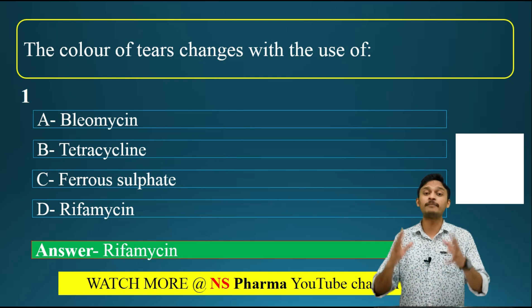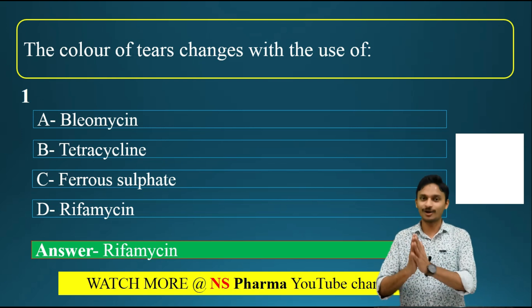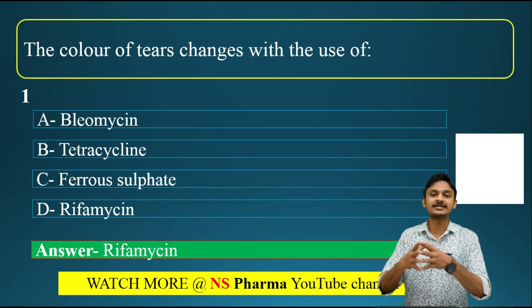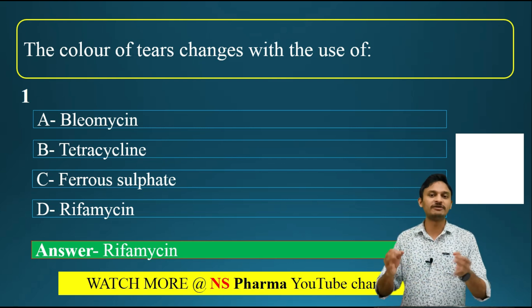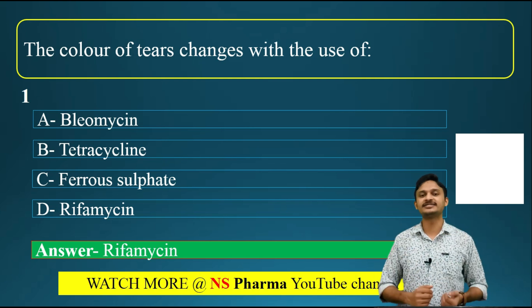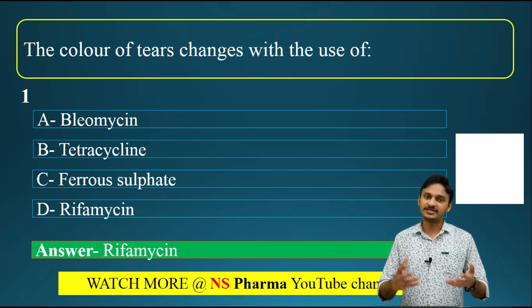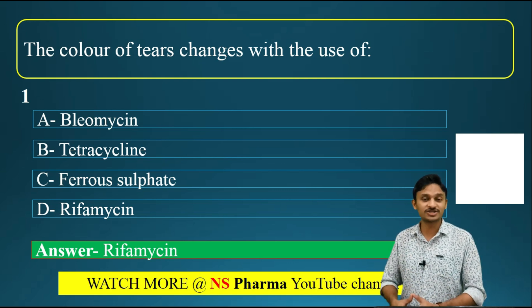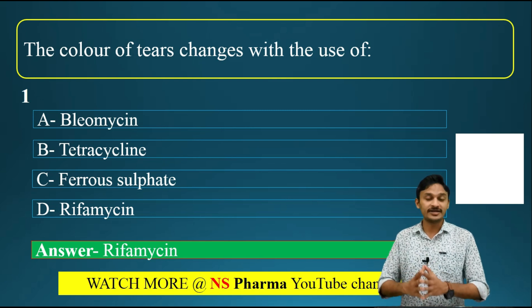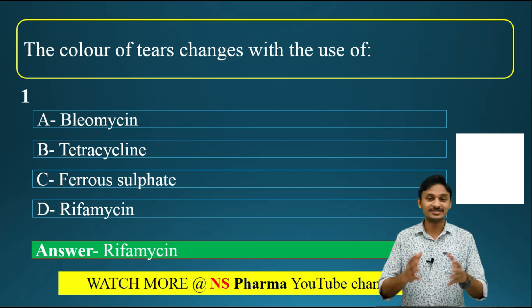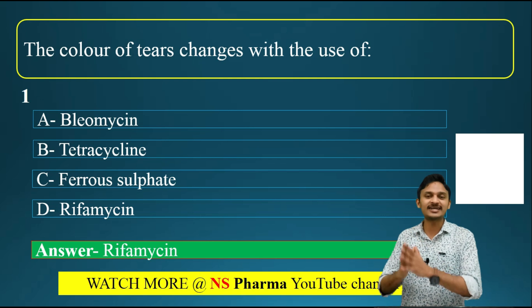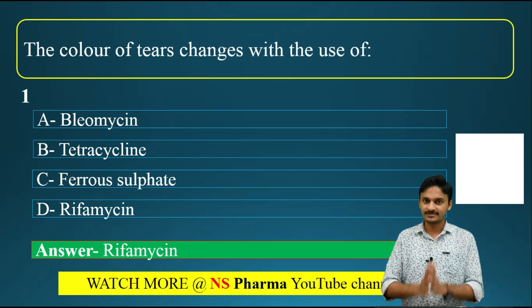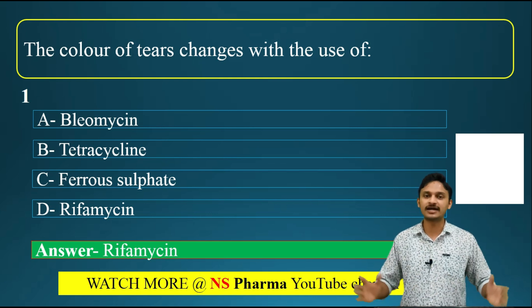Rifamycin can change the color of tears. Rifamycin has an adverse effect of orange-red coloration of body fluids like saliva, tears, sweat, and urine. The major adverse effect of rifamycin is hepatitis.